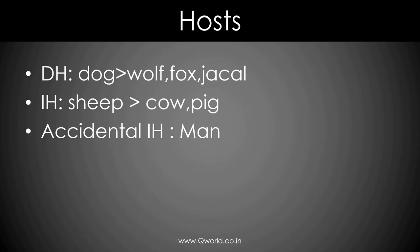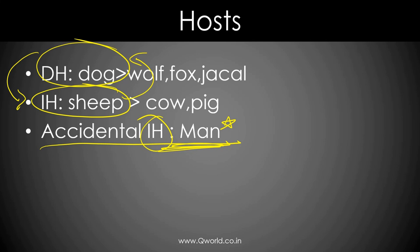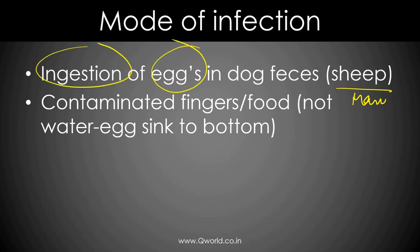Now the interesting part which will summarize everything is the life cycle. This is the one exception where humans are not the definitive host — the definitive host is the dog. The intermediate host is also not the human; the optimum intermediate host is sheep. So the cycle usually continues between dog and sheep, and humans are the accidental intermediate host. Mode of infection for humans and sheep is ingestion of eggs. The infective form is the embryonated egg. Anything contaminated with eggs — water or food — can also transmit infection.